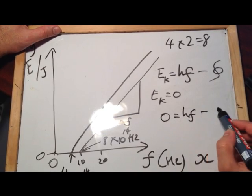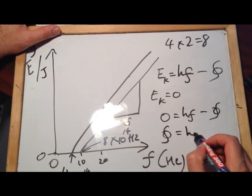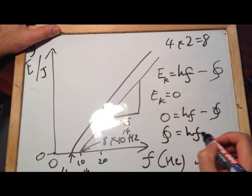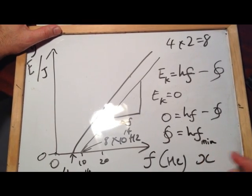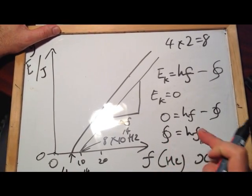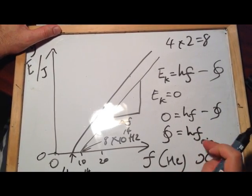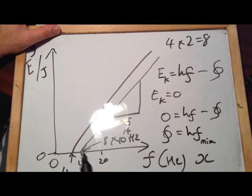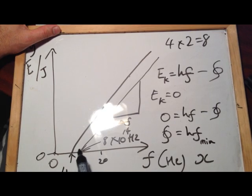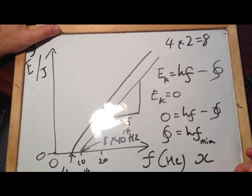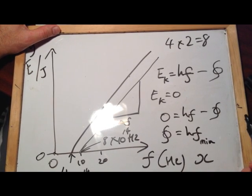0 equals hf minus the work function, if I take the work function to the other side, I have the work function equals h times f, but at this point, we call f here the minimum or the threshold frequency. So at this point, the work function equals Planck's constant times this very special minimum frequency. And that's why that is 8, because we've been told that it's double the previous work function, or it's double the previous frequency.